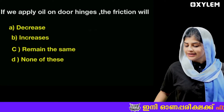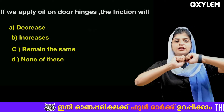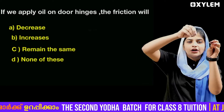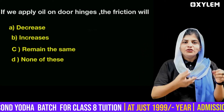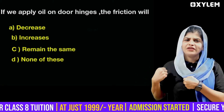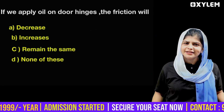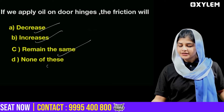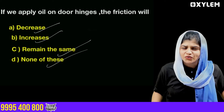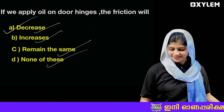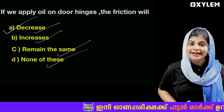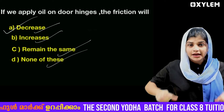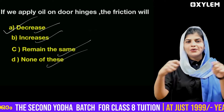Next question: If we apply oil on door hinges, the friction will... We have four options: A) Decreases, B) Increases, C) Remains the same, D) None of these. The answer is A — decreases. Friction decreases because oil is a lubricant. We use lubricants like oil to reduce friction and allow smooth movement.